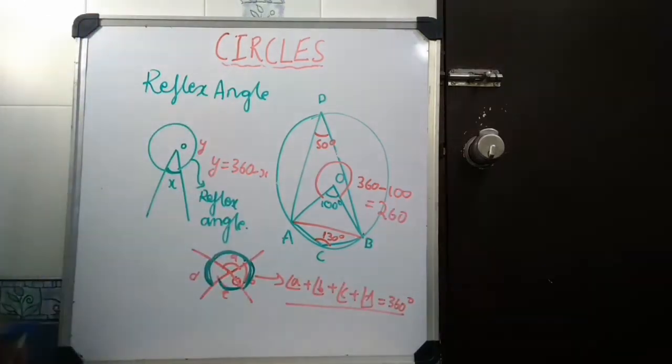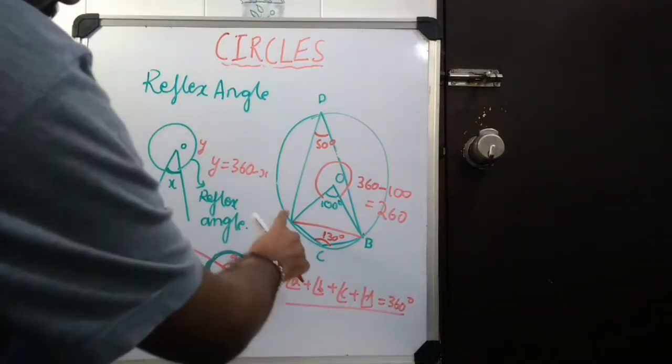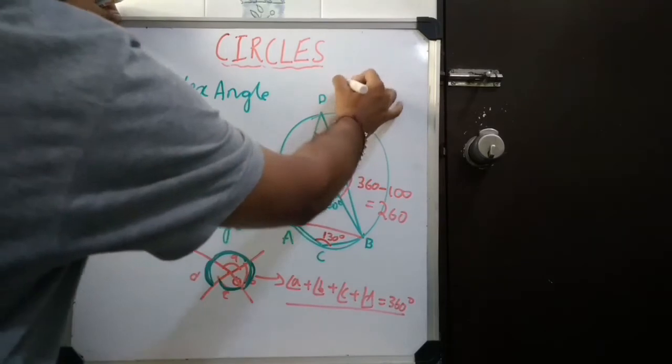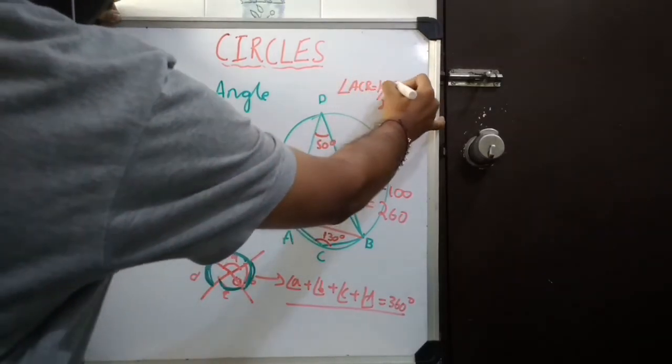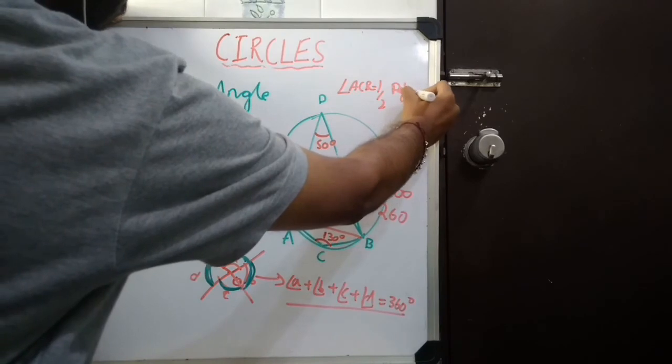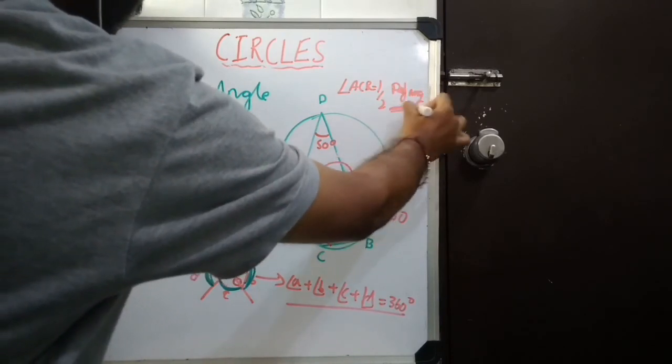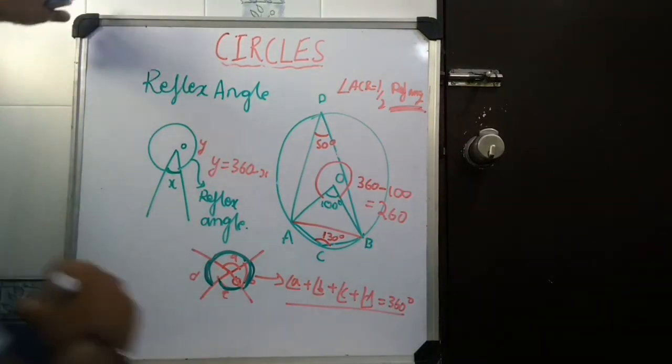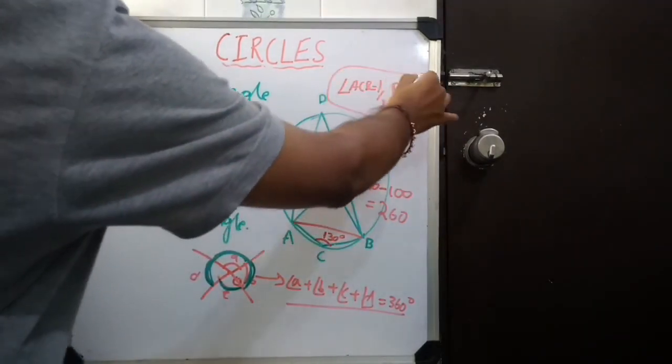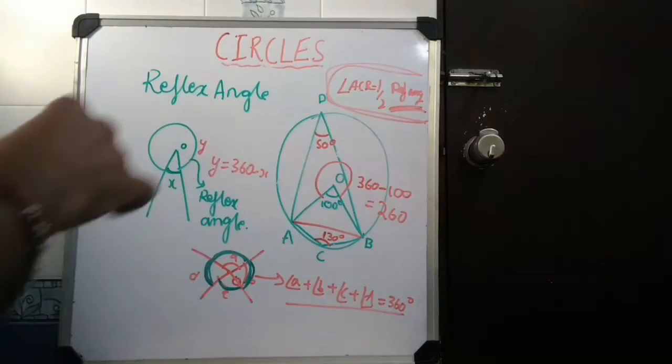Can you see one property? This angle A, C, B. Angle A, C, B is half of the reflex angle. If this is 260, this is 130. That is a very important property. This will be very useful in solving questions. Remember this.